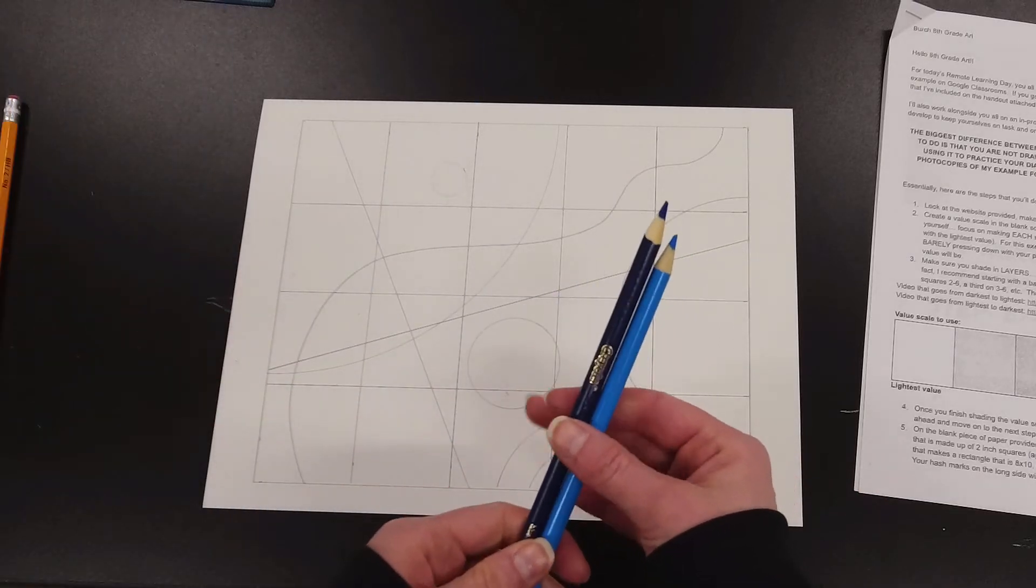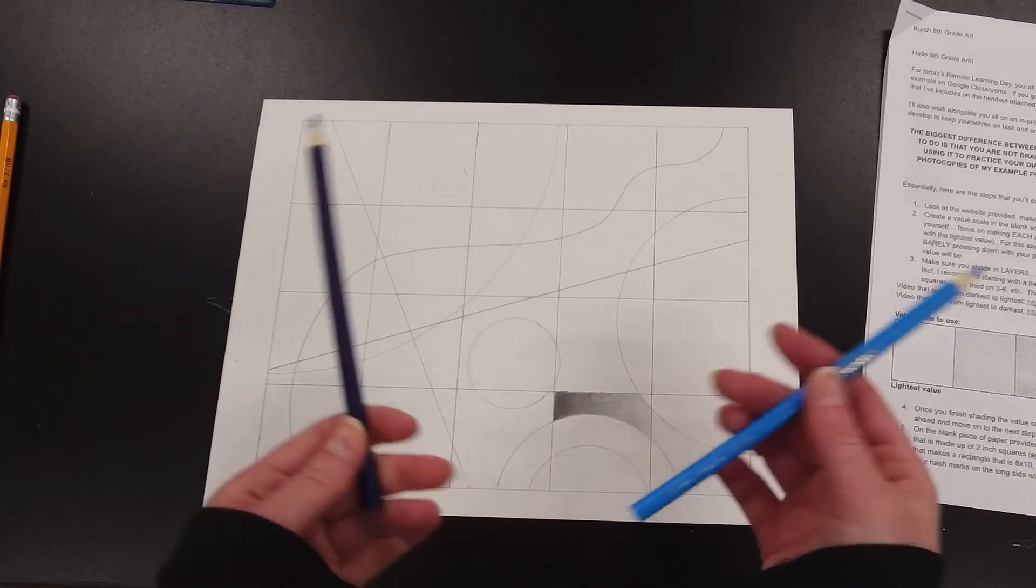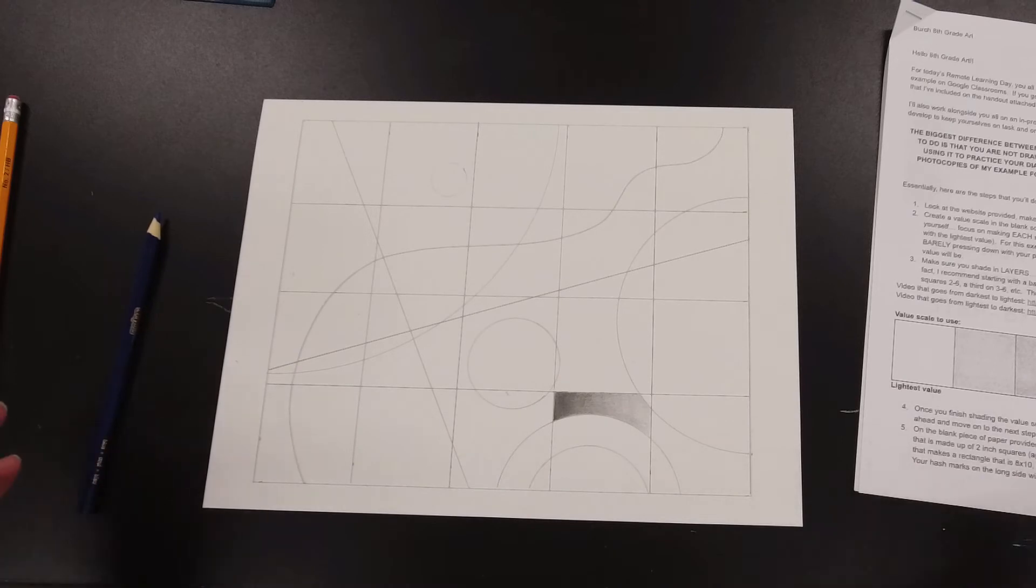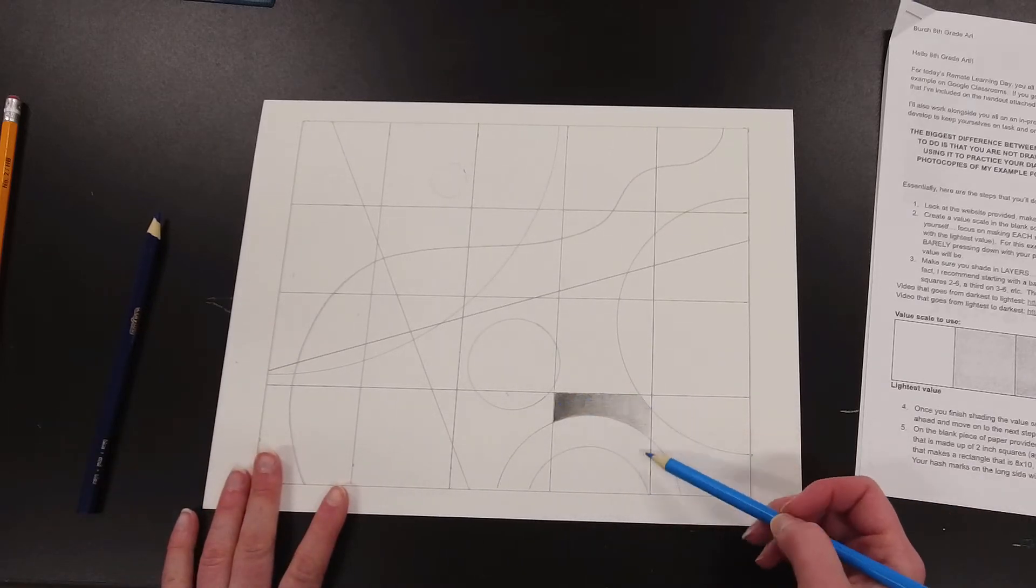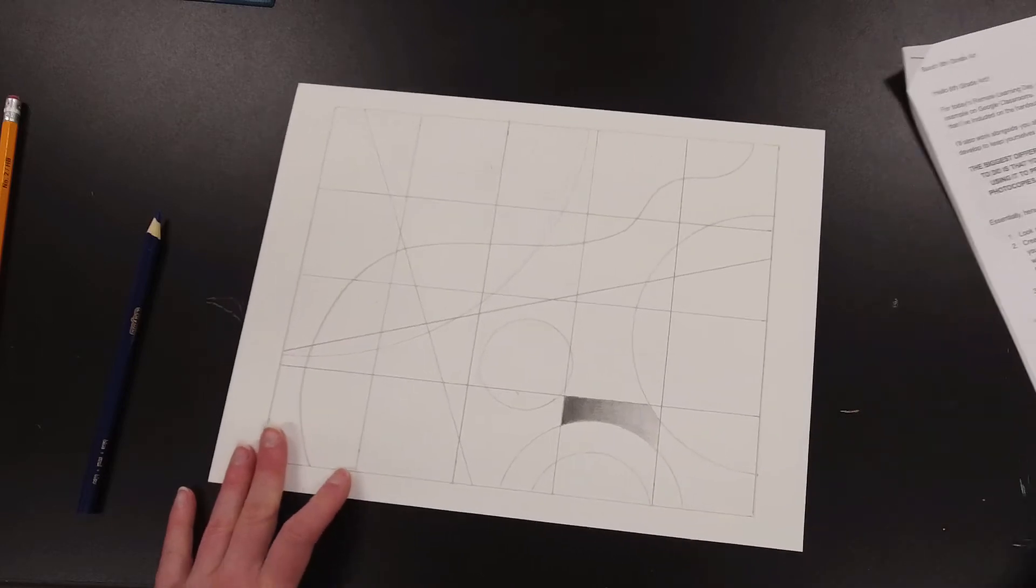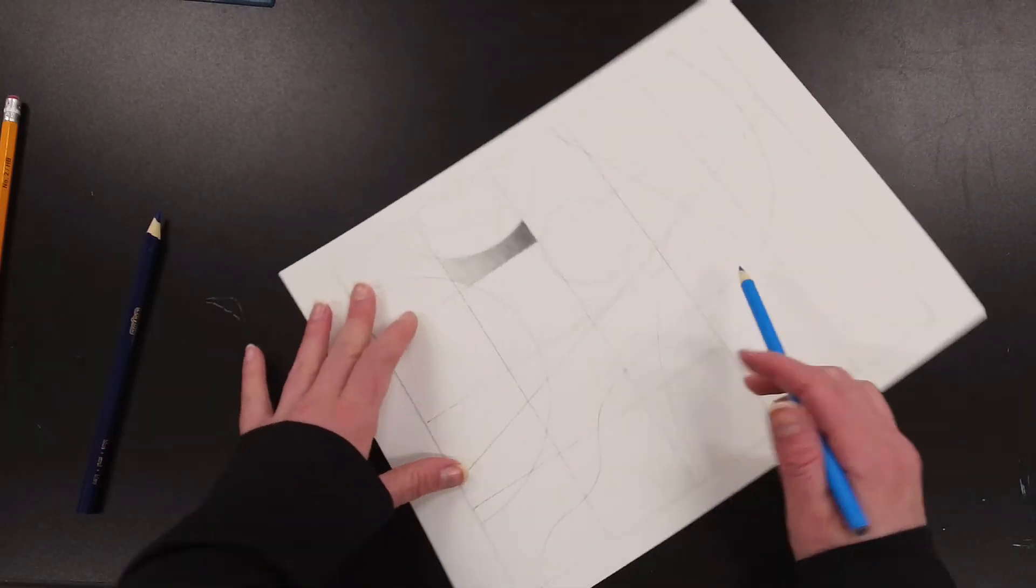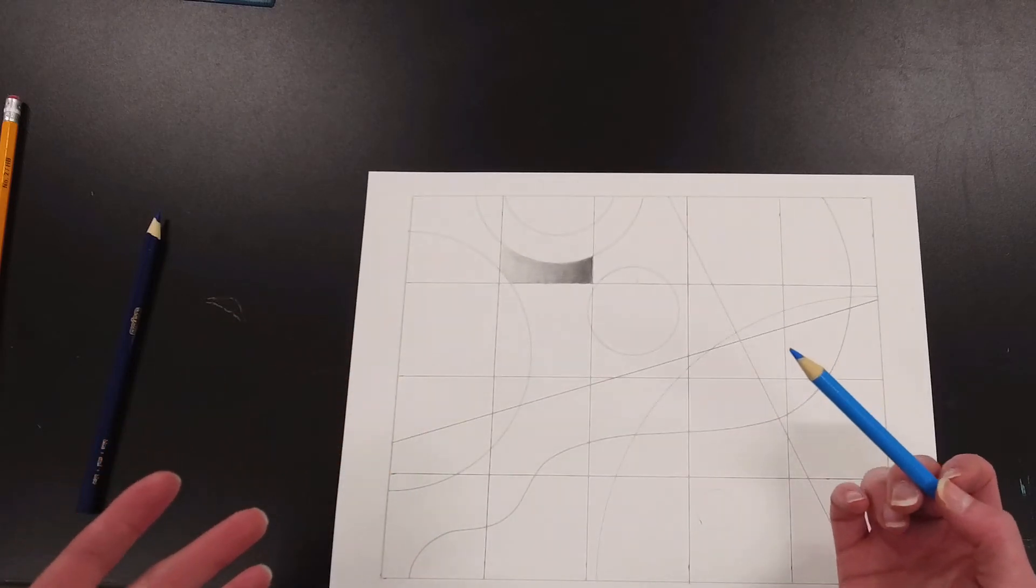What I want to do now is just show you a couple of different options in terms of colored pencils. Since my value scale goes from dark to light here, I might want this one to go from dark to light the opposite direction.